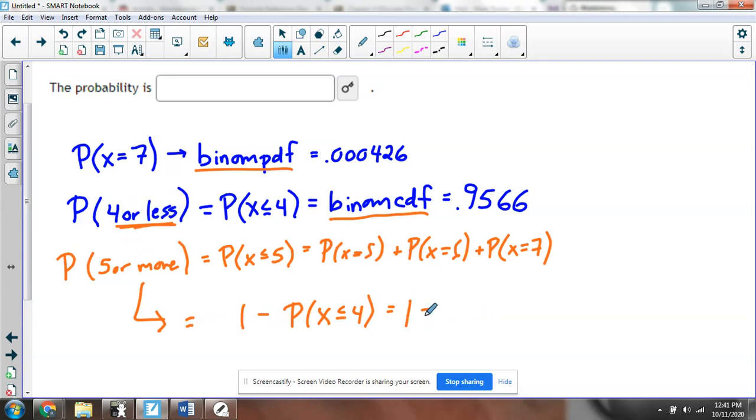So this would be 1 minus 0.9566. 1 minus 0.9566, which would give me roughly 0.0434. That's how it works.